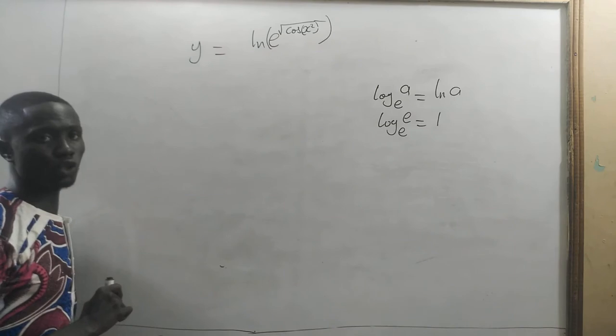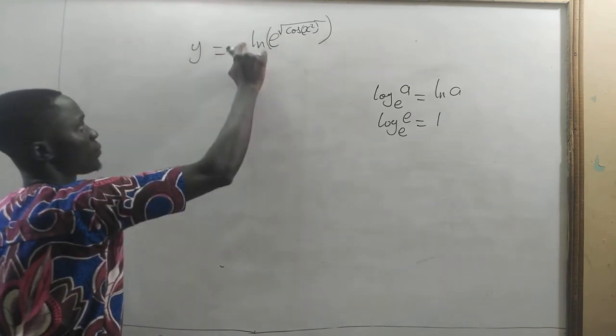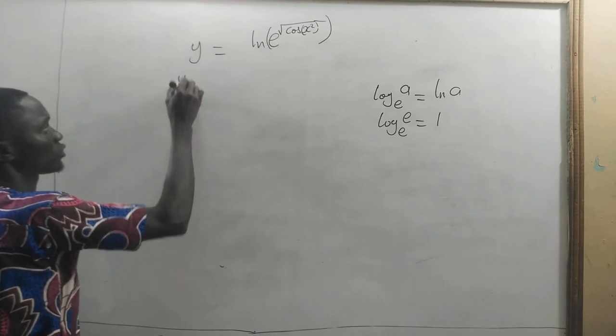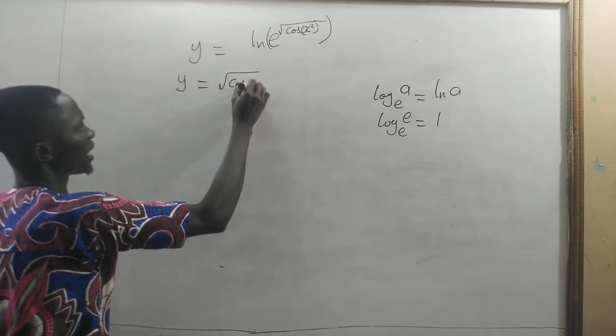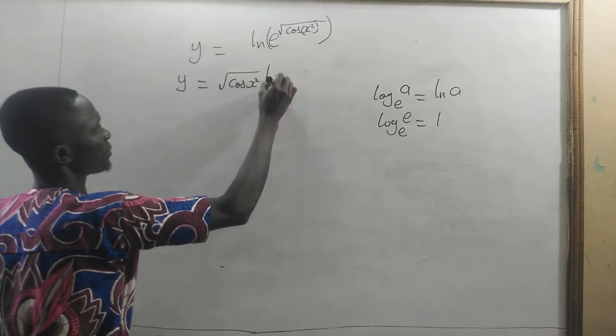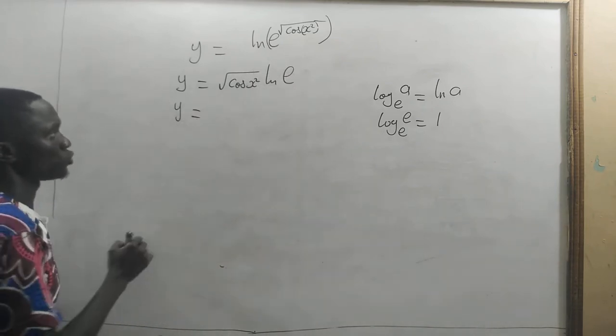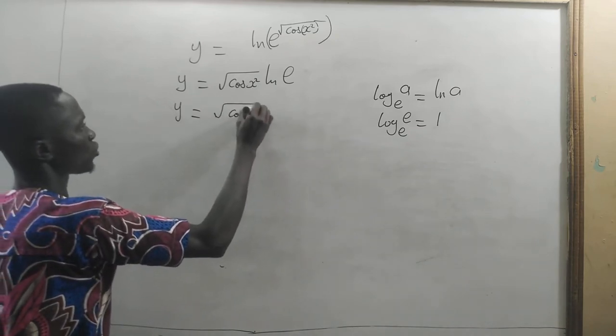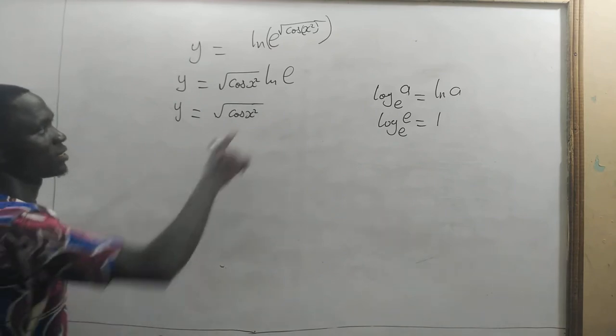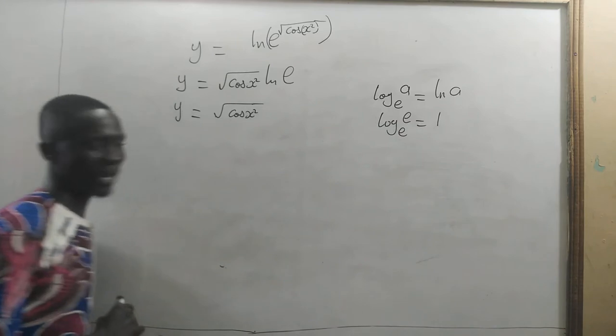Now, from the laws of logarithm, the exponent will come and multiply the log of the number. So we can write y to be equal to square root of cosine x squared times the natural log of e. Therefore y is equal to square root of cosine x squared. Very simple as that. Remember that natural log of e means log e to the base e, and that is 1.